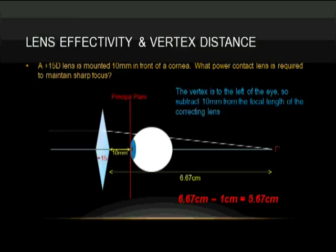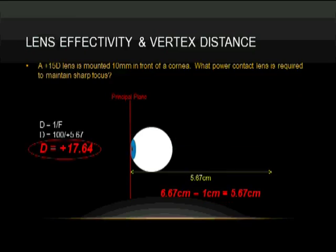Now we subtract the ten millimeters, that's the vertex distance, from the focal length of the correcting lens, and we get 5.67 centimeters. To convert that back into diopters is 17.64 diopters.